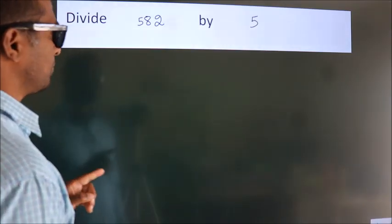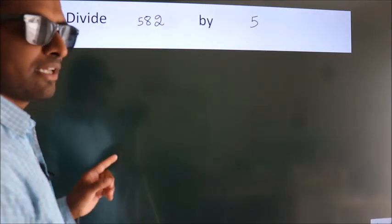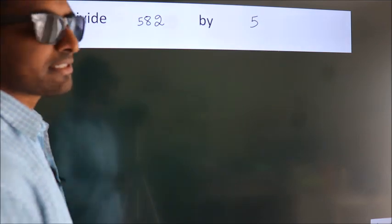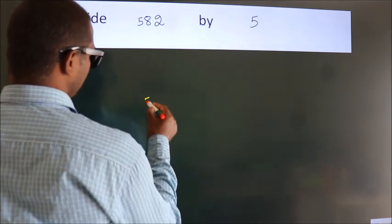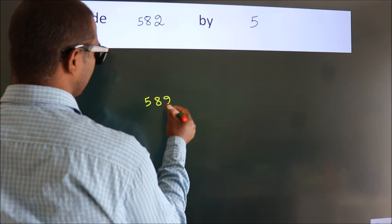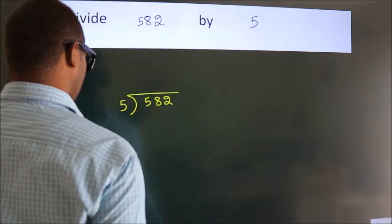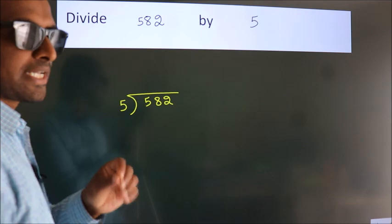Divide 582 by 5. To do this division, we should frame it in this way: 582 here, 5 here. This is step 1.